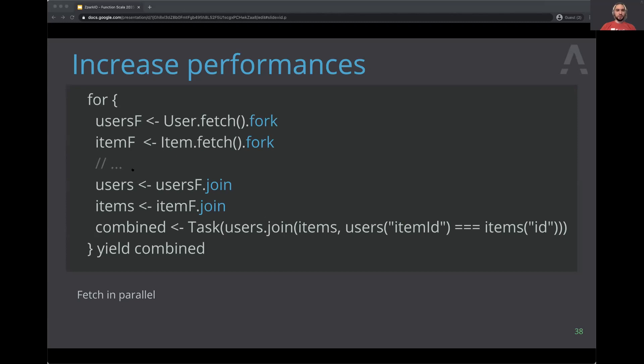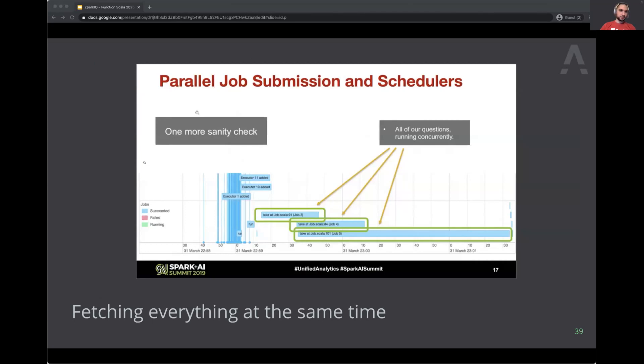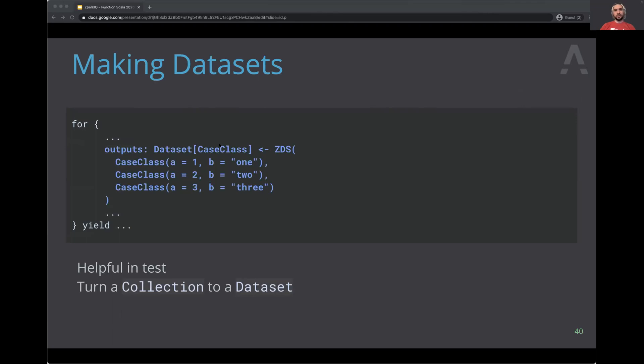You can also create a Dataset using a `toDS` API call that calls parallelize under the hood and creates a Dataset for you. This is particularly useful for unit tests: if you override your sources so that instead of reading from a database you return a hardcoded Dataset, you can run your entire application as a unit test. There's no need for implicits because everything is a case class.